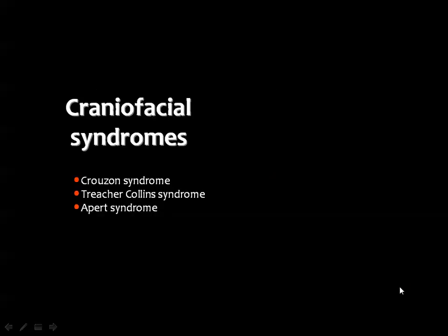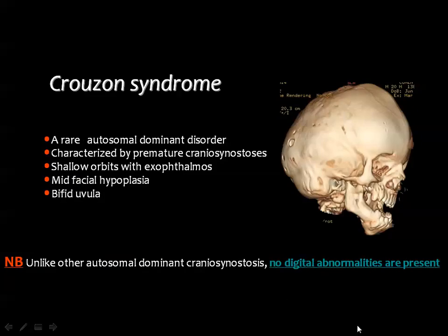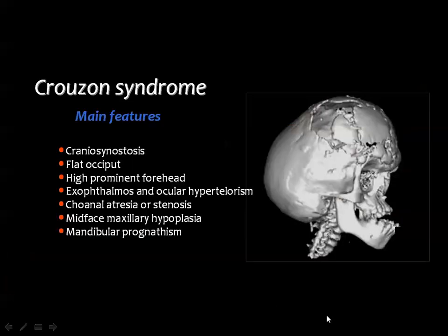Finally, we come to the craniofacial syndromes: Crouzon syndrome, Treacher Collins syndrome, and Apert syndrome. Crouzon syndrome is a rare condition resulting from premature craniosynostosis, associated with many skull and facial anomalies. Unlike other autosomal dominant craniosynostoses, no digital abnormalities are present in Crouzon syndrome. Main features include craniosynostosis, flat occiput, high prominent forehead, exophthalmos, hypertelorism, choanal atresia or stenosis, midface and maxillary hypoplasia, and mandibular prognathism — well demonstrated by 3D reconstructed images.